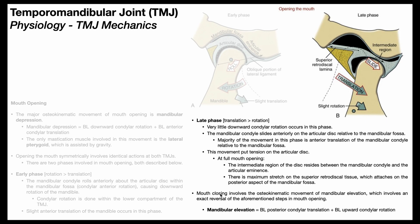What about mouth closing? If the major osteokinematic movement of mouth opening was mandibular depression, then the osteokinematic movement of mouth closing should be mandibular elevation. The biomechanics of mandibular elevation are really just an exact reversal of what we just saw. The early phase of closing would actually be the translation, but in the opposite direction — posterior and superior translation, mostly posterior condylar translation. Then the late phase of closing would be the rotation, but it wouldn't be downward mandibular rotation; it would be upward mandibular rotation. So closing is just a reversal of what we saw with opening.